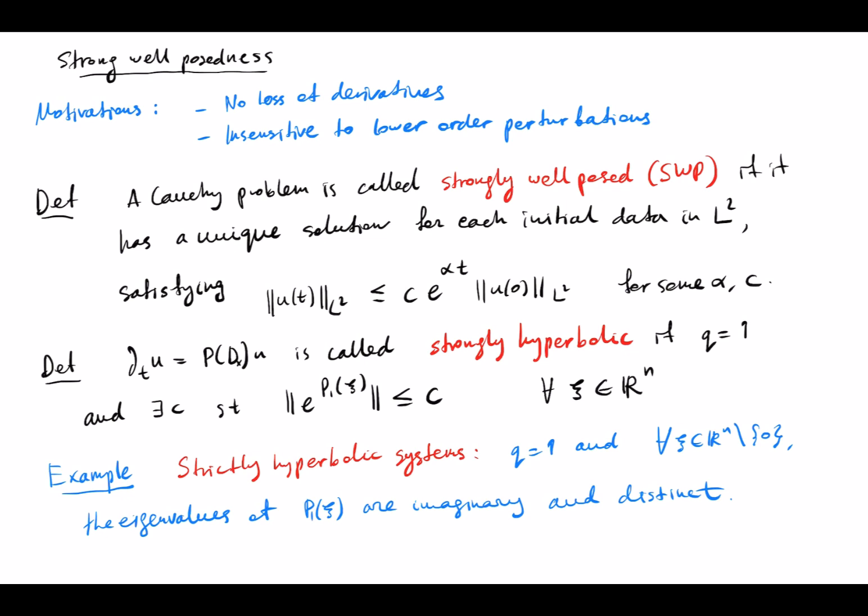If we want to study this in terms of some algebraic conditions, then we will be led to two notions. One is a certain type of hyperbolicity and the other one is a certain type of parabolicity condition. The hyperbolicity condition here is called strong hyperbolicity.